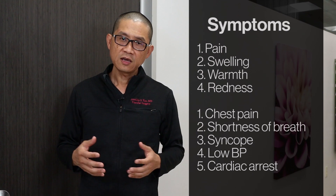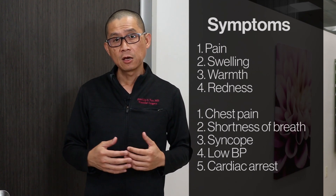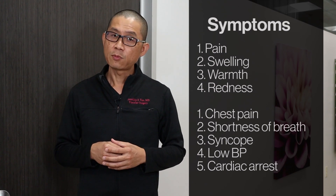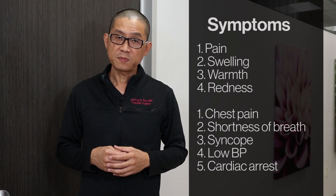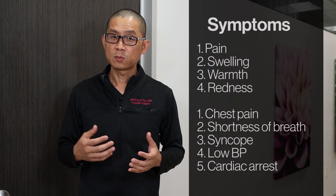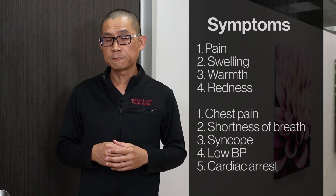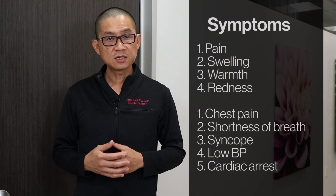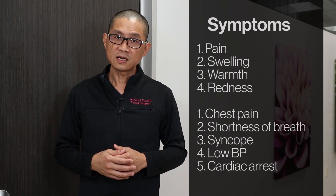The severity of the symptoms increases with the size of the clot. When the DVT breaks loose and goes to the lung and becomes a pulmonary embolism, the patient experiences chest pain and shortness of breath — usually shortness of breath with minimal exertion. In severe cases, patients can lose consciousness, develop low blood pressure, and in some cases develop sudden cardiac arrest.